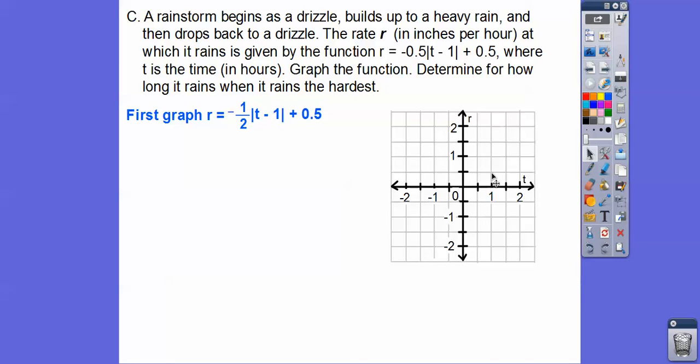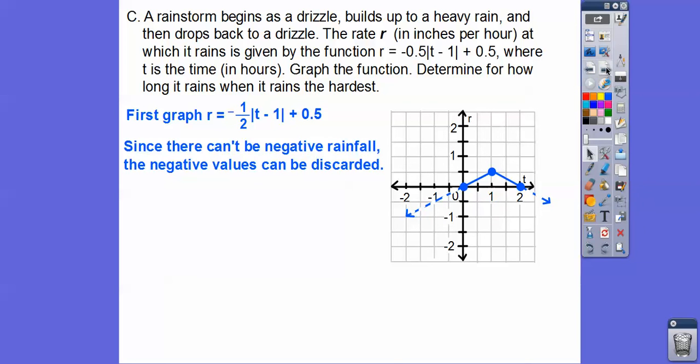And then we'll go down 1 over 2 from this vertex. So down 1 is going to be there, over 2 is going to be way over here. So down 1 over 2. Or we can go down 1/2 over 1. That's the same as down 1 over 2 right there. So now we can, since there can't be any negative rainfall, so this is rainfall, and this is the positive rainfall, this is the negative rainfall below. There can't be any negative rainfall, so we don't need to worry about this part of the graph right here. So I dotted that out right there.